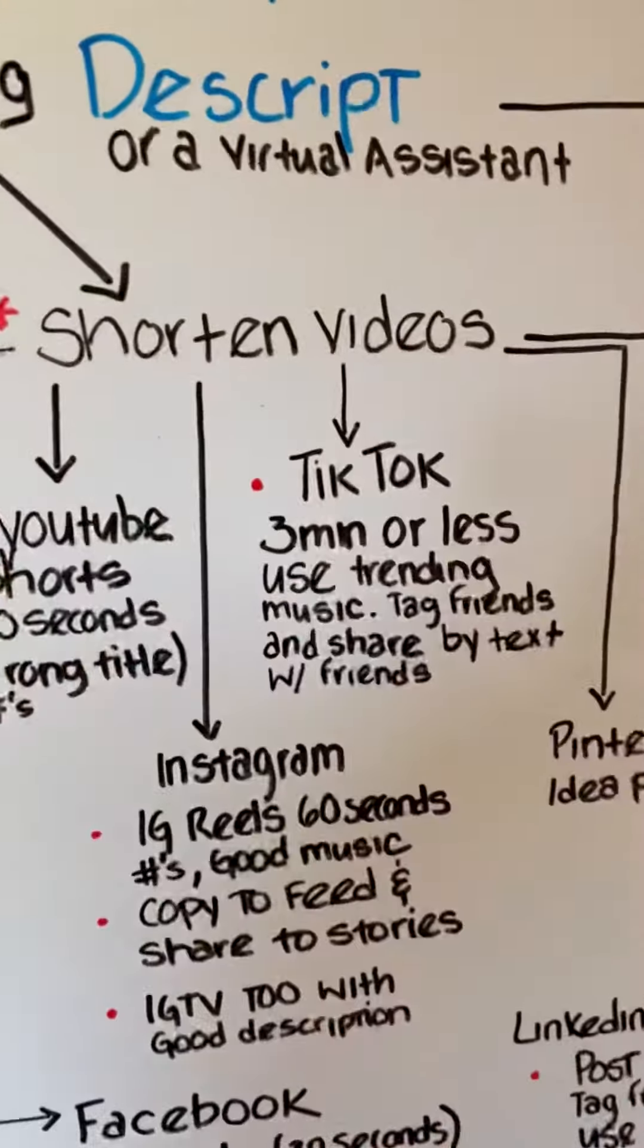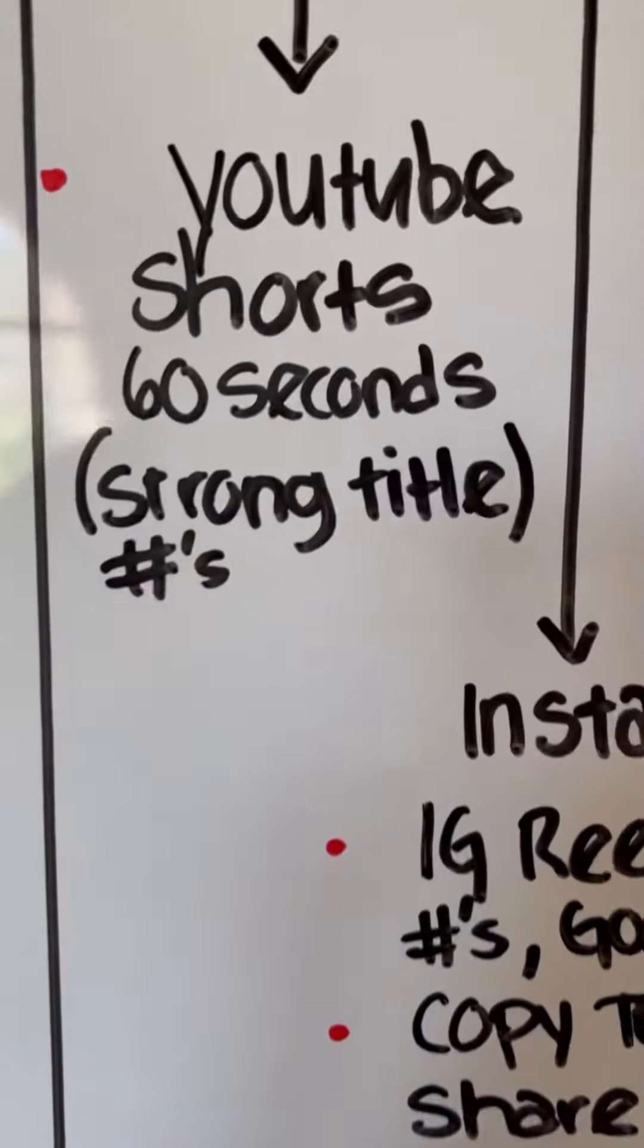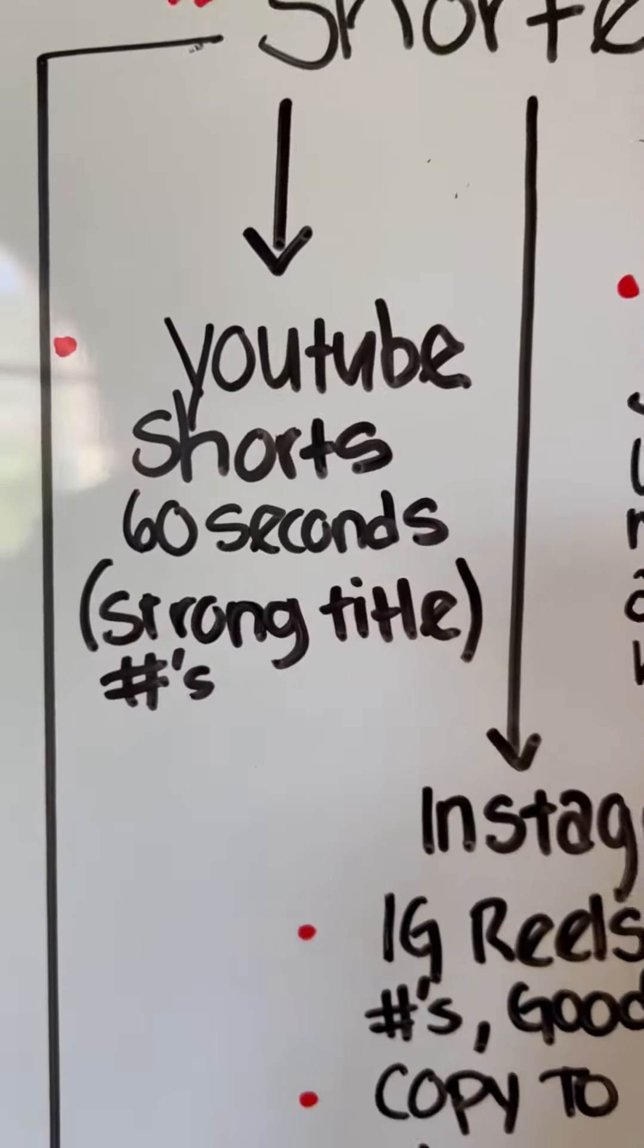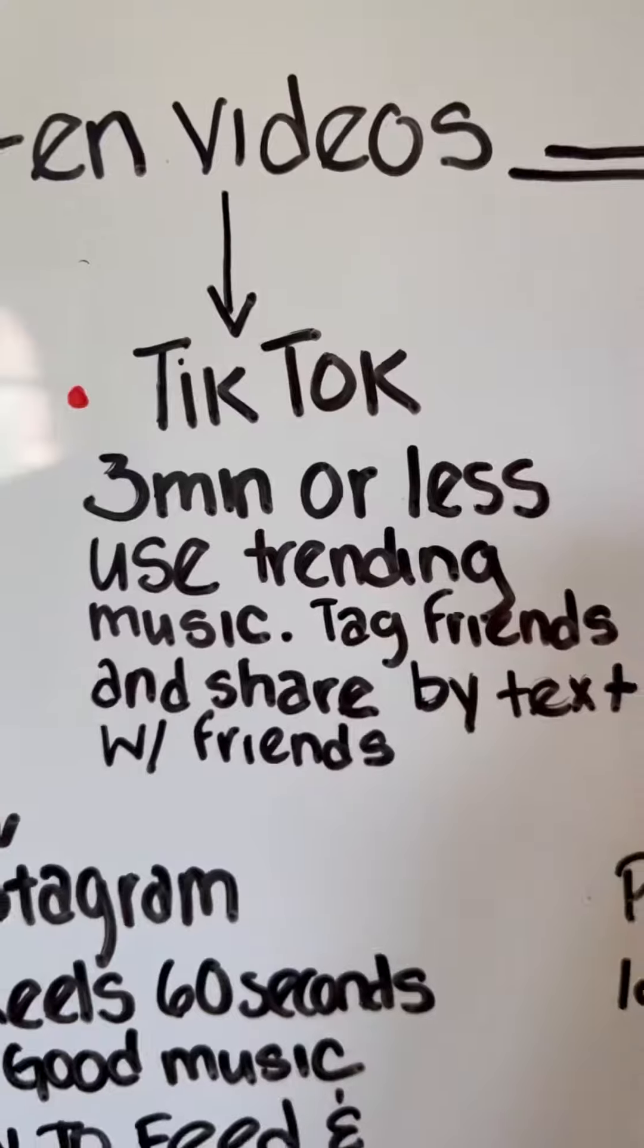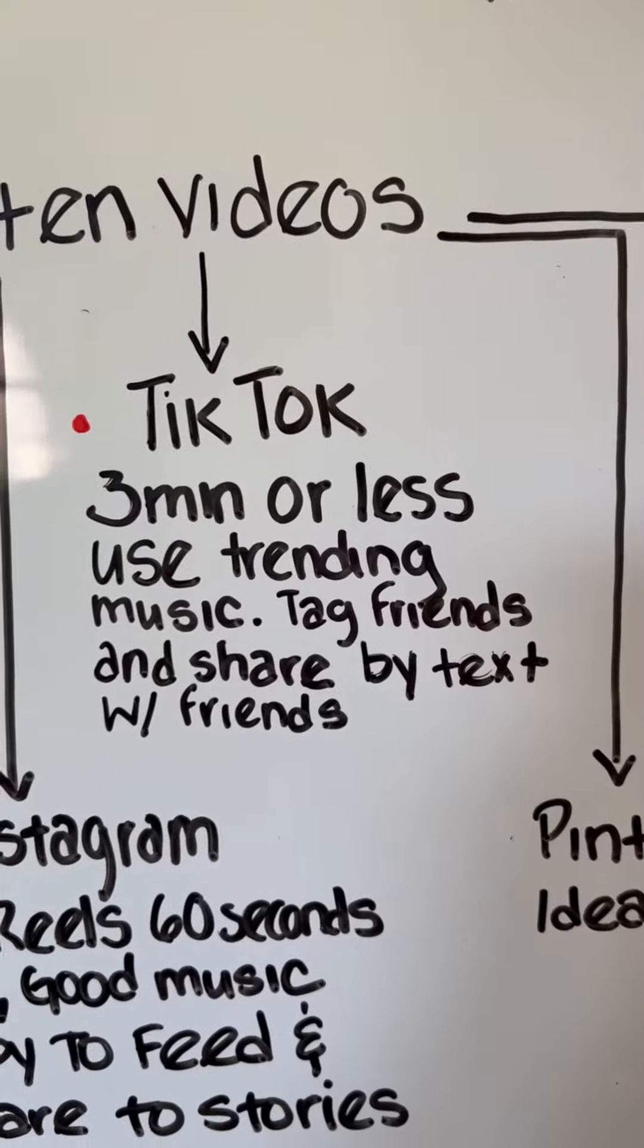Let's go to the shortened videos next. You're going to put it up on YouTube Shorts, 60 seconds or less, use a strong title, good hashtags. Next, TikTok, three minutes or less, use trending music - that's what we've noticed works really well. Tag your friends, share it by text with others.